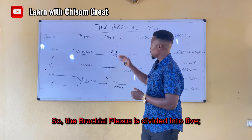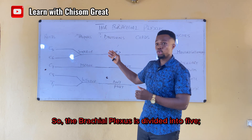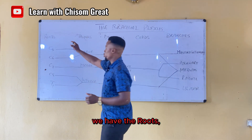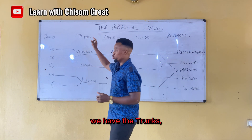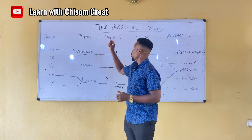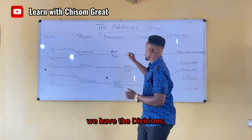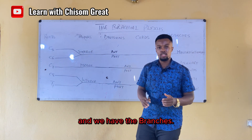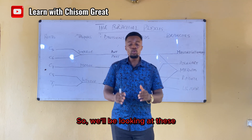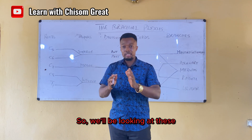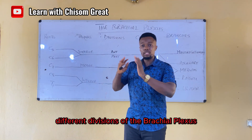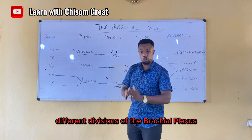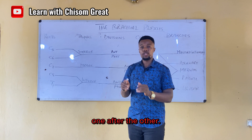The brachial plexus is divided into five components: we have the roots, we have the trunks, we have the divisions, we have the cords, and we have the branches. We will be looking at these different divisions of the brachial plexus one after the other.